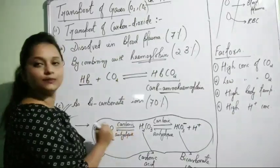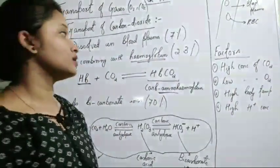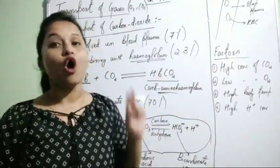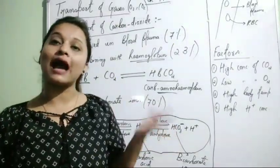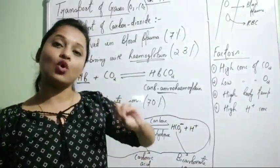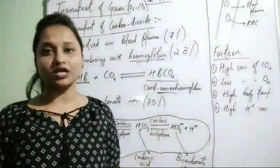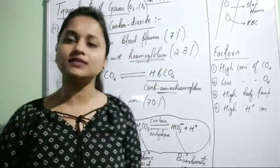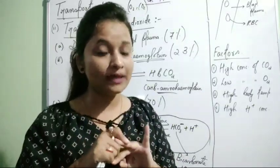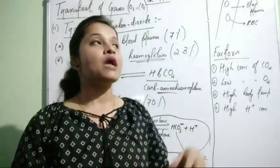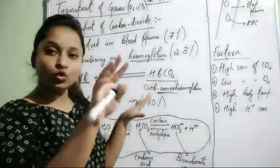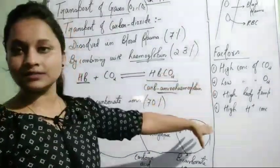The factors necessary for transport of carbon dioxide are the opposite of those for oxygen transport: high concentration of carbon dioxide, low concentration of oxygen, high body temperature, and high H+ ion concentration. These conditions exist in body tissue where carbon dioxide is produced by the process of respiration, allowing it to travel into the blood.